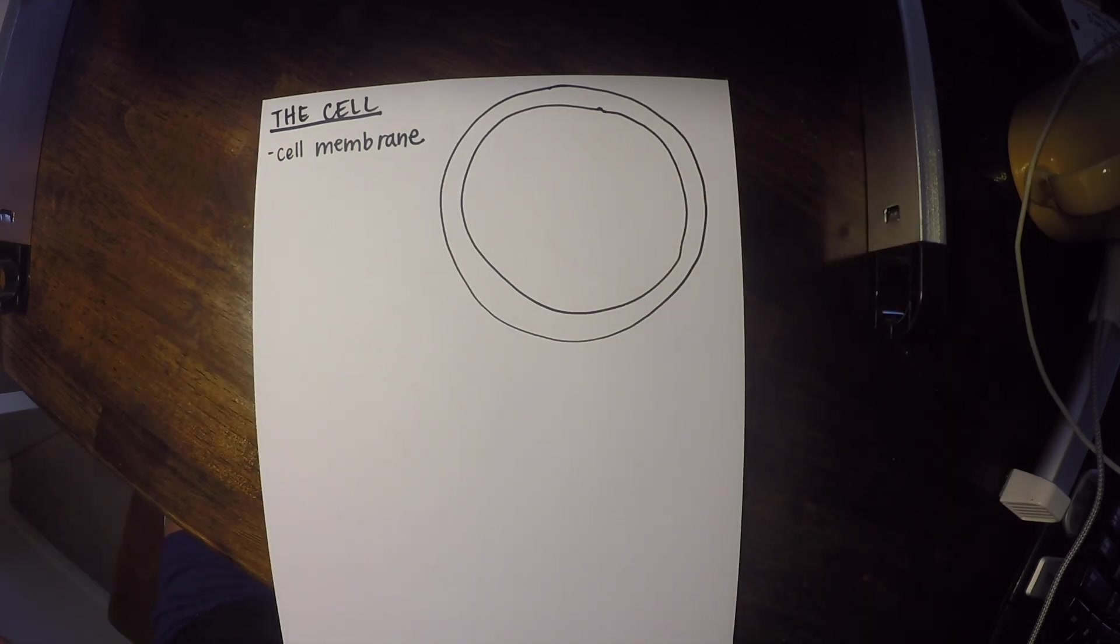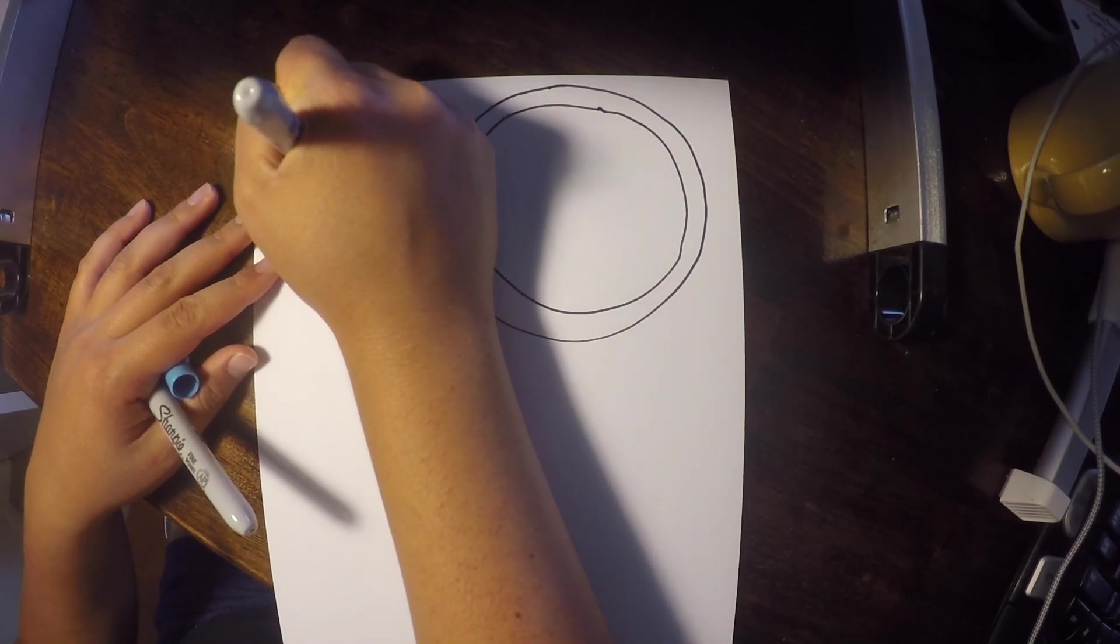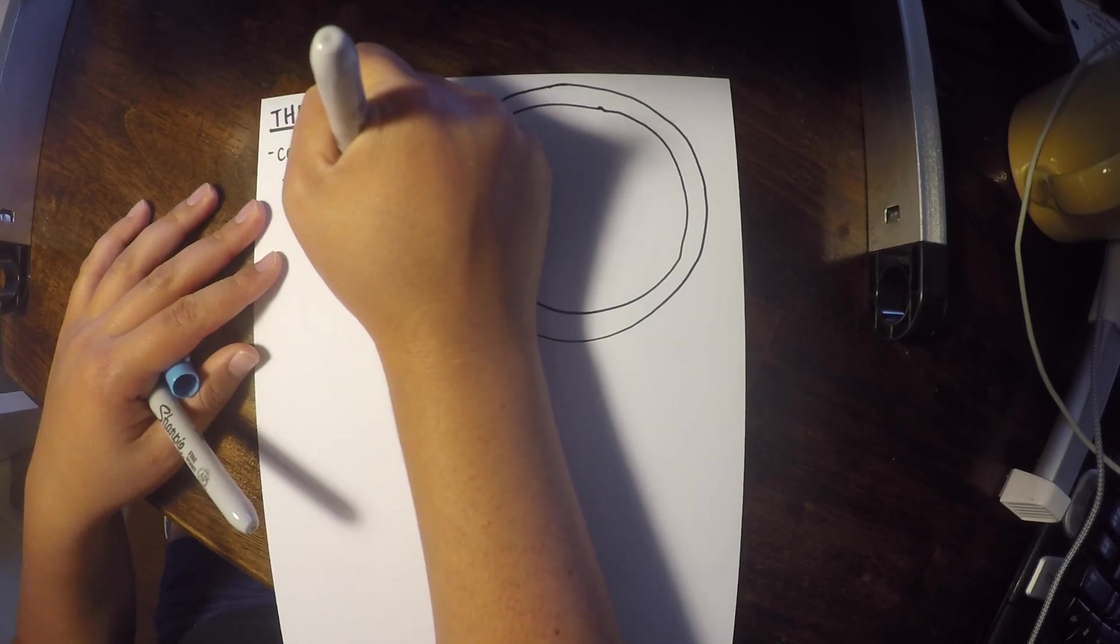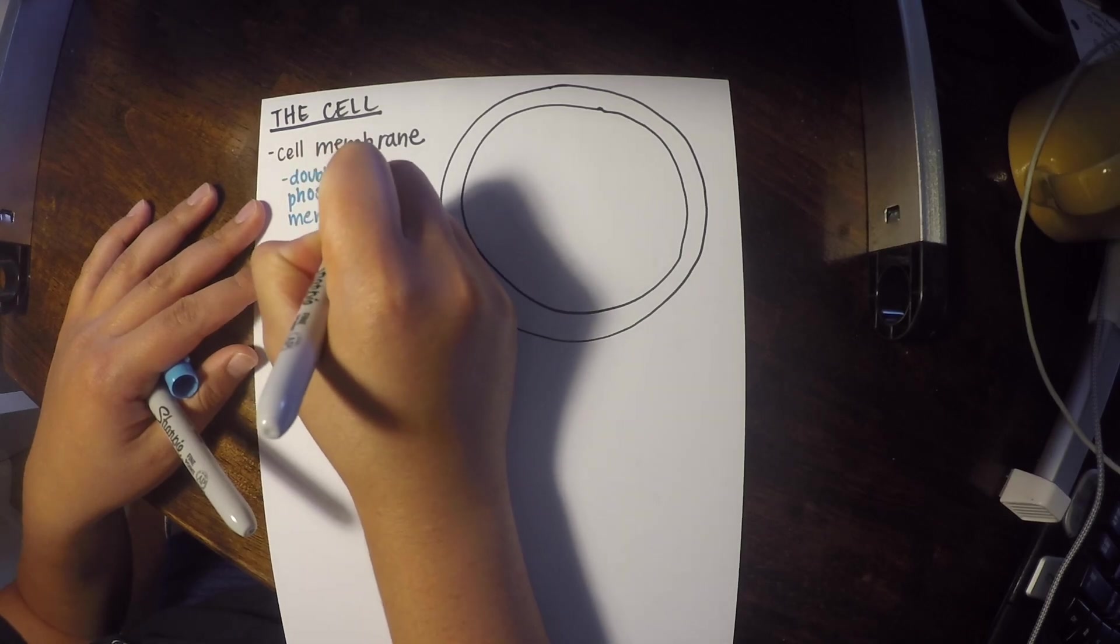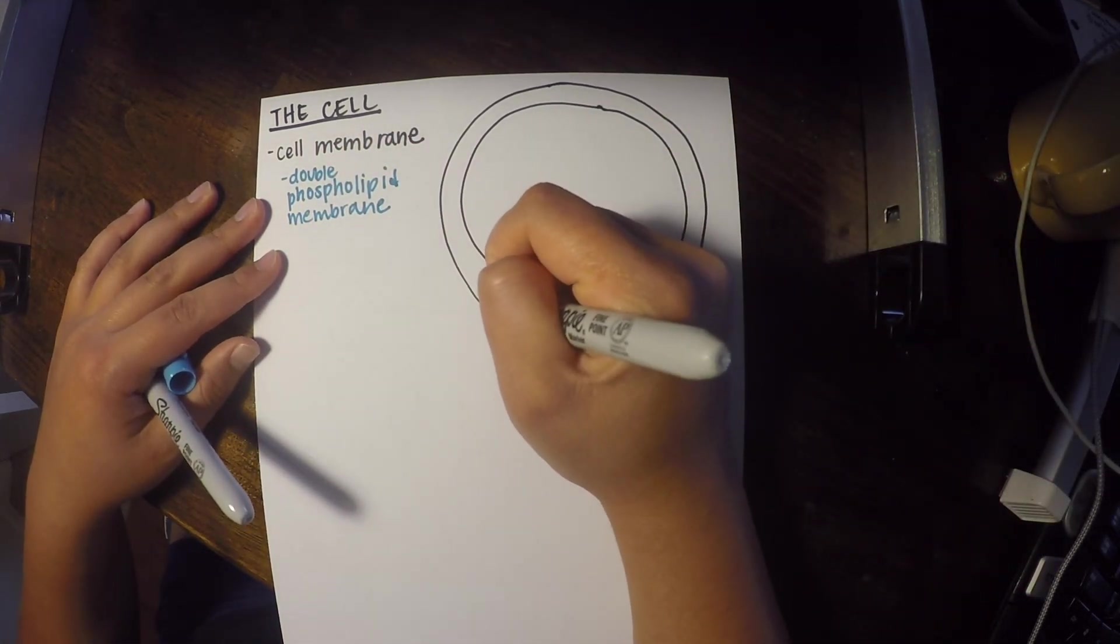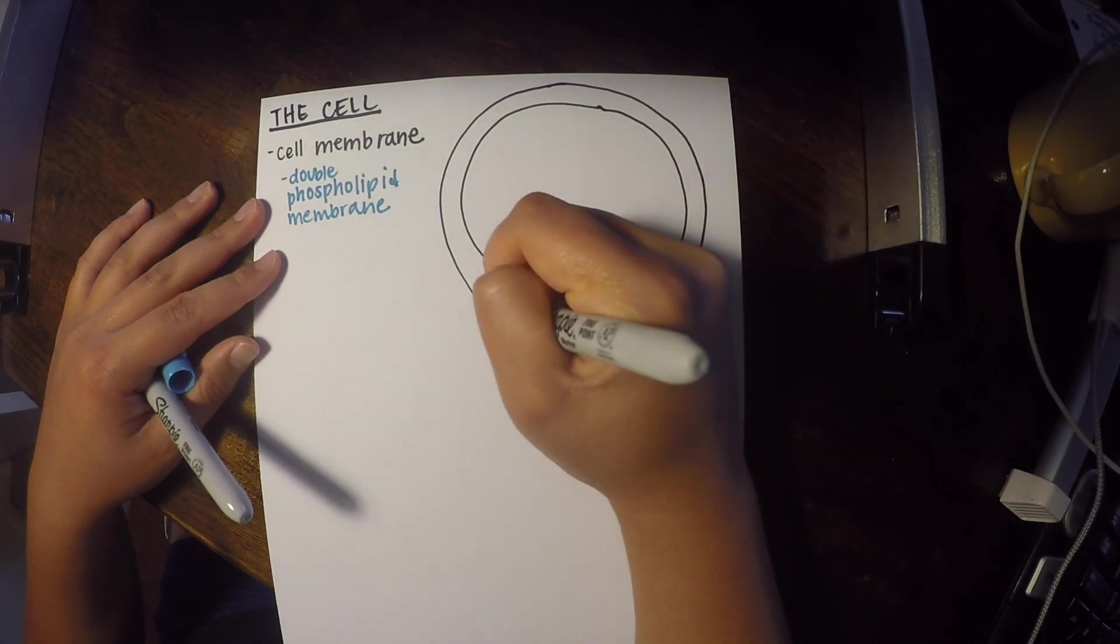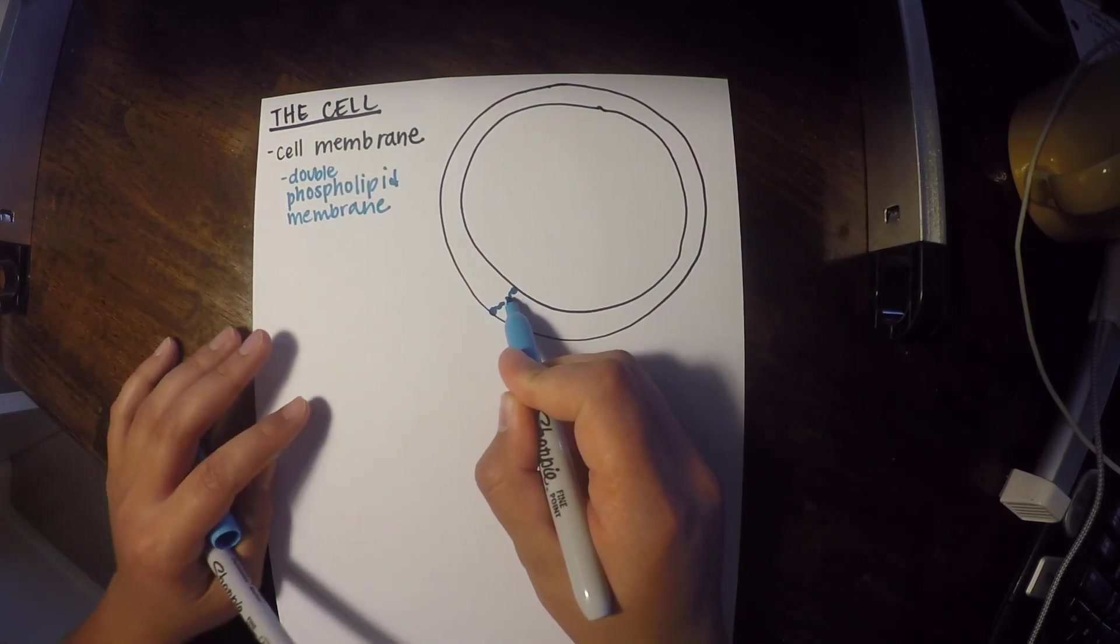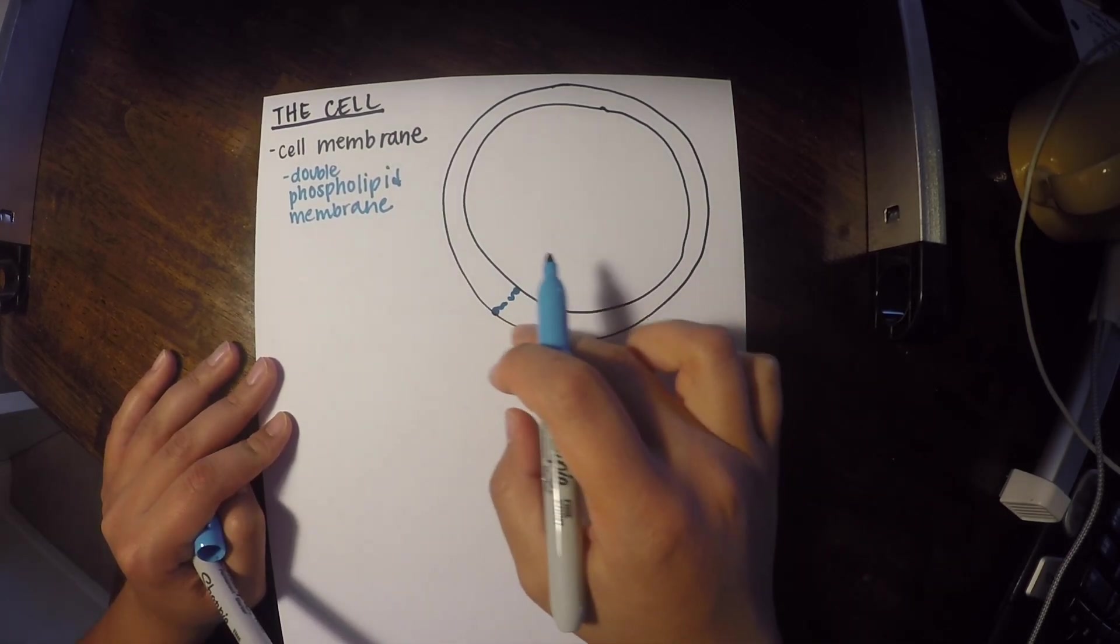So within that, we're actually going to have something called a double phospholipid membrane. And that is arranged with two cells, as you can see, just like this, with tails going towards the center of this membrane.